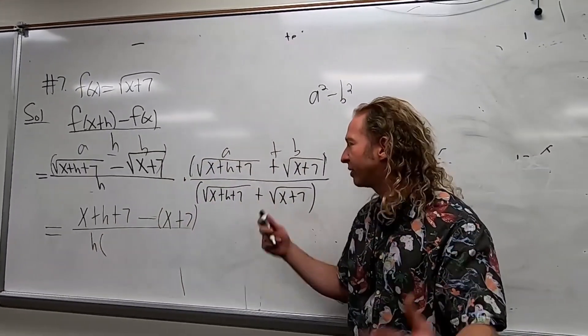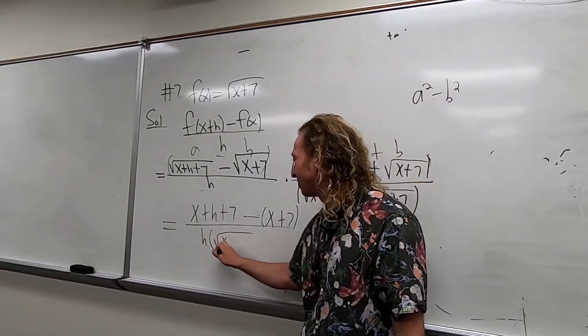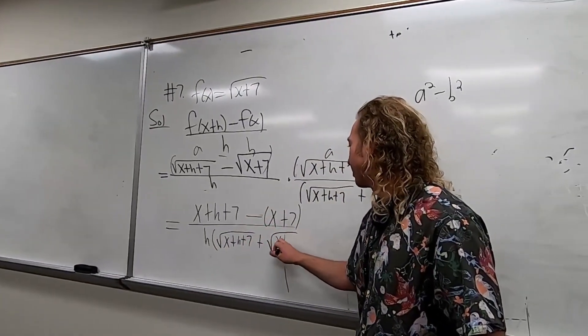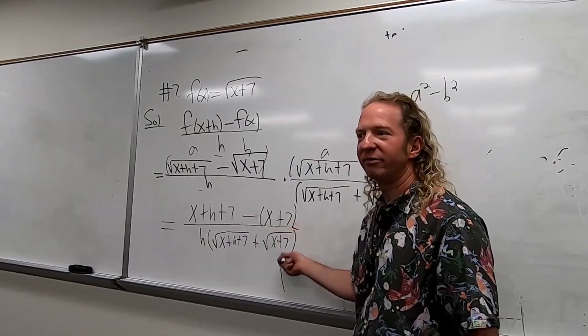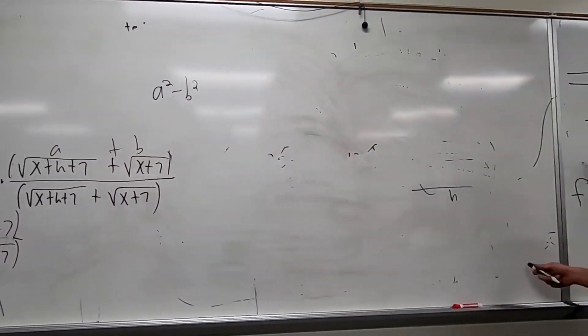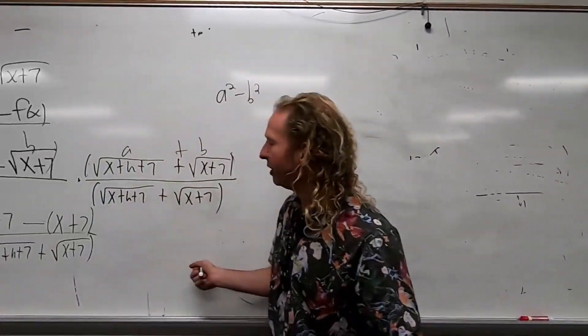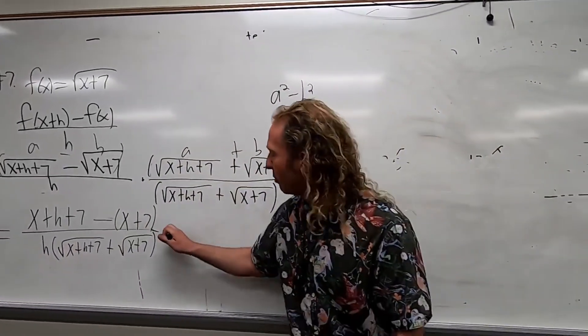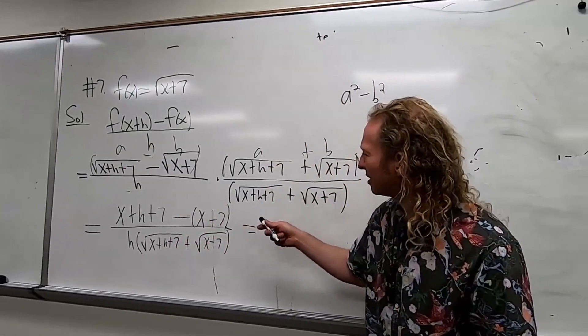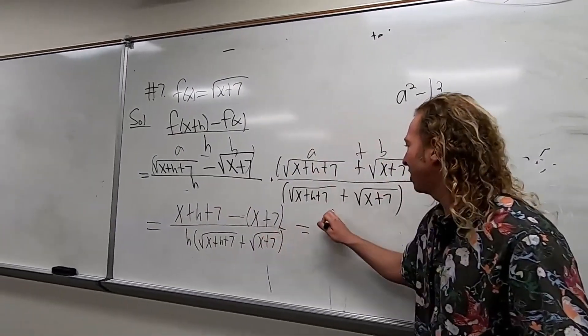So one mistake I make when rushing through the test is I forget this part. Now I'm aware of it. At this point we can distribute the negative 1 and stuff will cancel. The x's cancel, the 7's cancel, so we just have h.